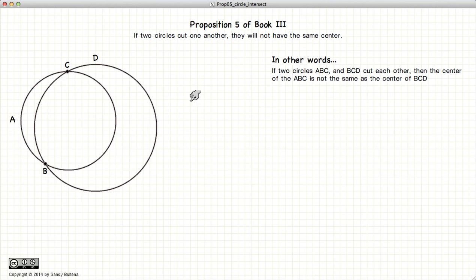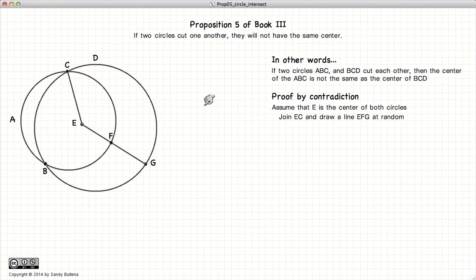We're going to demonstrate this by proof by contradiction. So assume that E is the center of these two circles, ABC and CBD. Let's join EC and draw another line at random, EFG.